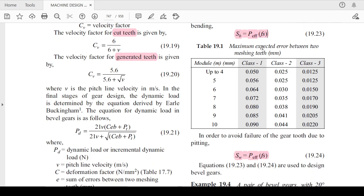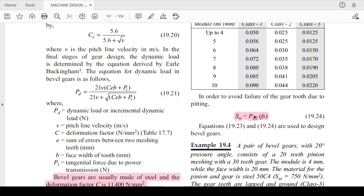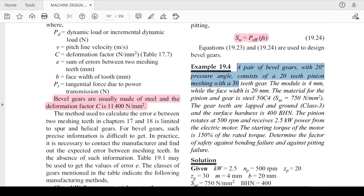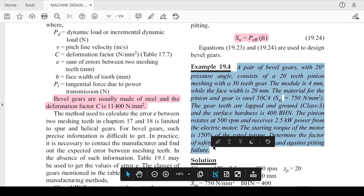Whichever is minimum, you can select either beam strength or wear strength, whatever you are getting minimum. Depending on that particular parameter criteria, we will solve this numerical in the upcoming session. You can practice by your own and go through this particular numerical so that you can have your doubts cleared whenever we are going to discuss this particular topic.